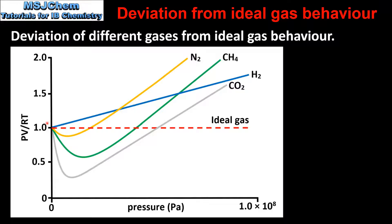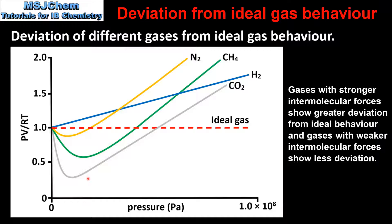On this graph we can see the deviation from ideal behavior for four different gases: hydrogen, nitrogen, methane, and carbon dioxide. Each gas differs in its deviation from ideal behavior. At moderately high pressures, carbon dioxide and methane show significant deviation, whereas hydrogen and nitrogen show less deviation. The deviation at moderately high pressures is due to intermolecular forces. Both carbon dioxide and methane have stronger intermolecular forces than nitrogen and hydrogen, so they show the greatest deviation. Hydrogen shows the least deviation because of its low molar mass, which results in weak London dispersion forces. Gases with weak intermolecular forces show less deviation from ideal gas behavior, and gases with stronger intermolecular forces show more deviation.